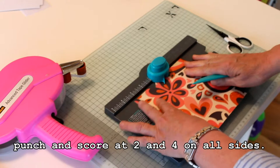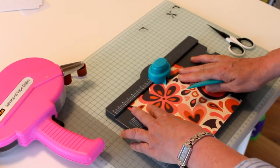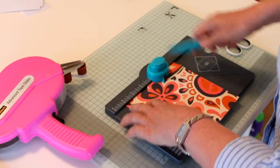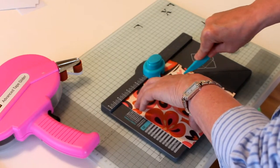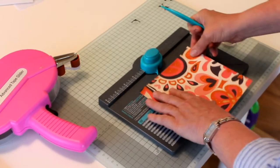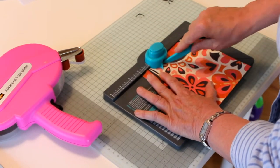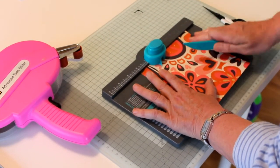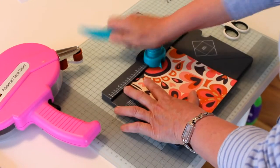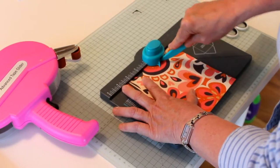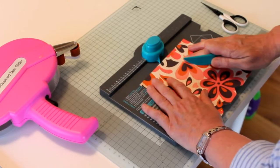You punch and score again. Then you turn it, go back to two, punch and score, and then to four, punch and score. You just do the same on all four sides.